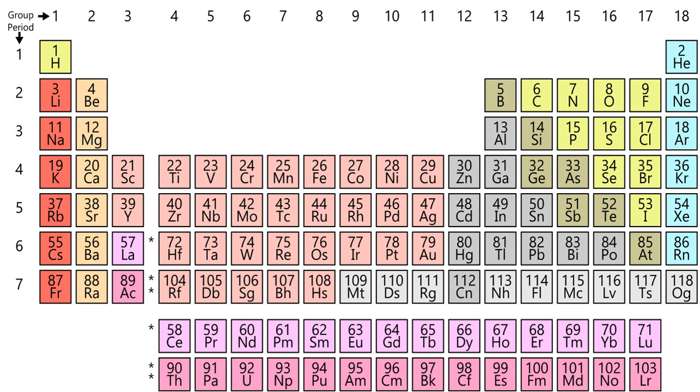In chemistry and atomic physics, the main group is the group of elements whose lightest members are represented by helium, lithium, beryllium, boron, carbon, nitrogen, oxygen, and fluorine as arranged in the periodic table of the elements.